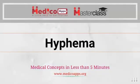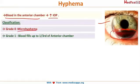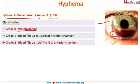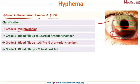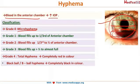Hyphema is defined as blood in the anterior chamber. As you can see in the picture, there is blood all over the anterior chamber, and it will cause an increase in intraocular pressure. The grades are: grade 0 — microhyphema; grade 1 — blood fills up to one-third of the anterior chamber; grade 2 — one-third to half; grade 3 — greater than half; grade 4 — total hyphema, the entire anterior chamber is filled with blood and is completely red.